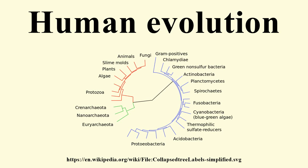The brains of these early hominids were about the same size as that of a chimpanzee, although it has been suggested that this was the time in which the human SRGAP2 gene doubled, producing a more rapid wiring of the frontal cortex. During the next million years a process of rapid encephalization occurred, and with the arrival of Homo erectus and Homo augustus in the fossil record, cranial capacity had doubled to 850 cc.